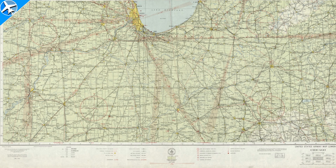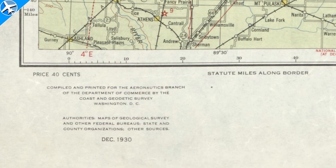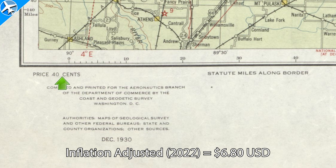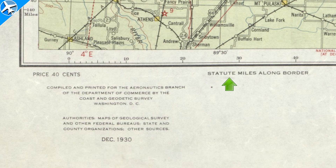There are no airspace markings, but the new four-course radio ranges are shown on the map. The aeronautical map we're looking at is from December of 1930 and it would have cost the pilot 40 cents. Statute miles were used; nautical miles, which are used today, would not become the standard until 1954.